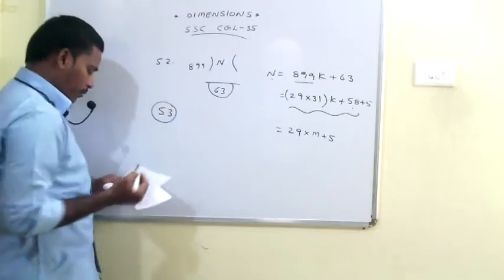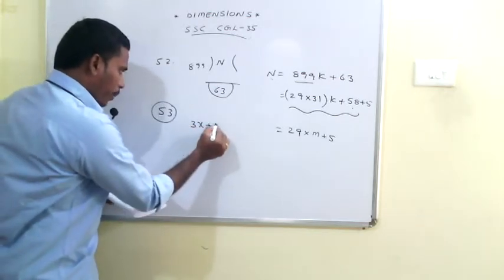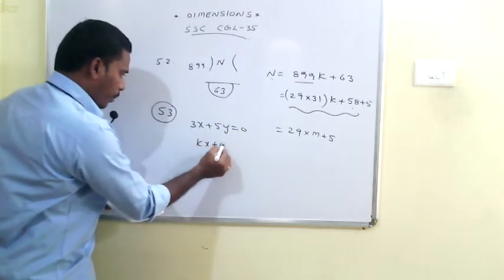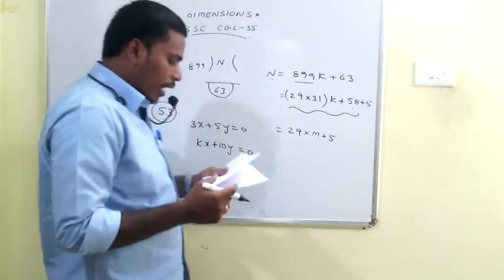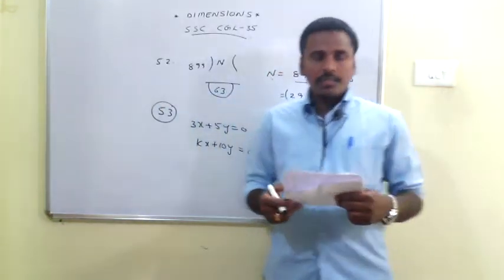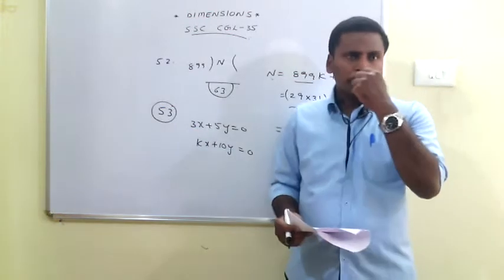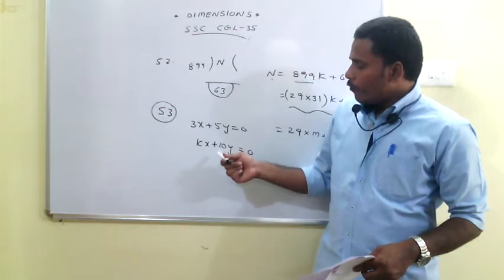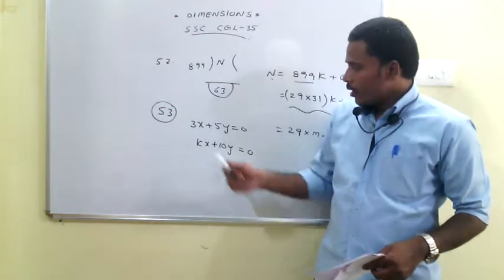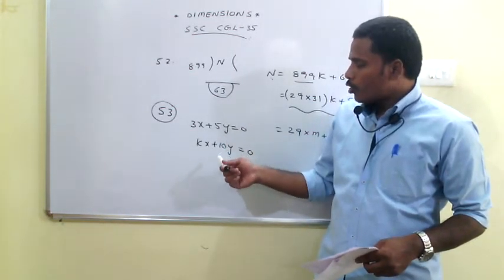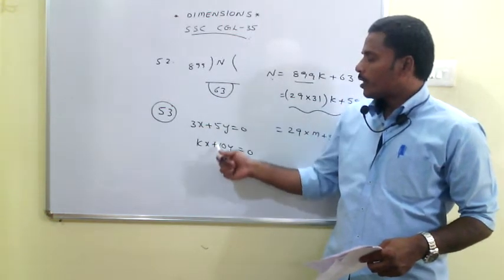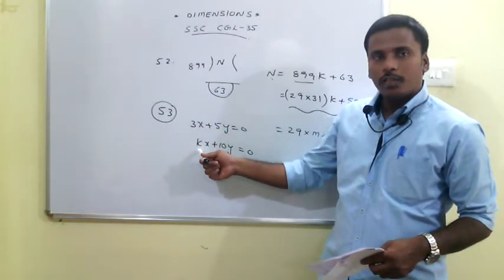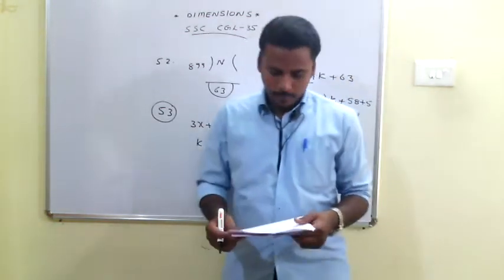The 53rd problem: the given equations are 3x + 5y = 0 and kx + 10y = 0. Find the value of k such that the system has a non-zero solution. To get a non-zero solution, the corresponding coefficients must be in the same ratio. The ratio between 5 and 10 is 1:2, so the ratio between 3 and k must also be 1:2. Therefore, the value of k is 6.